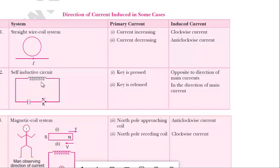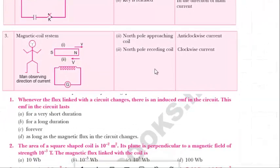Next is a self-inductive circuit. In the inductor, if the key is pressed (switch is on), the direction of induced current will be opposite to the direction of main current. While the switch is on, current is increasing, so induced EMF will try to reduce the current — the induced current always acts opposite to the main current. While the key is released, the induced current will be in the direction of the main current.